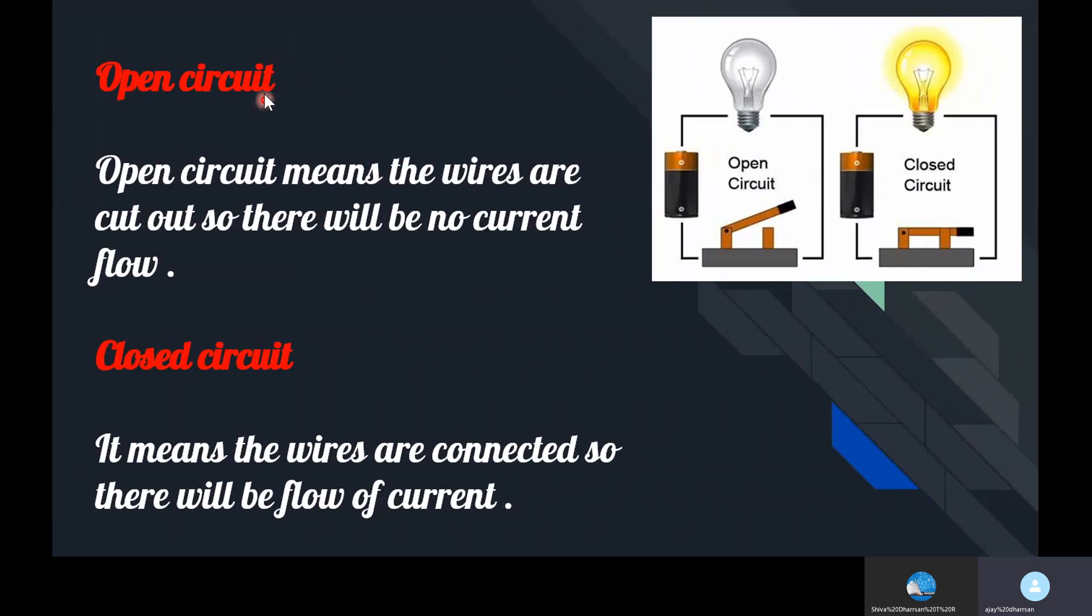Electric circuits are of two types: open circuit and closed circuit. What is open circuit? Open circuit means that the wires are cut out, so there will be no current flow.